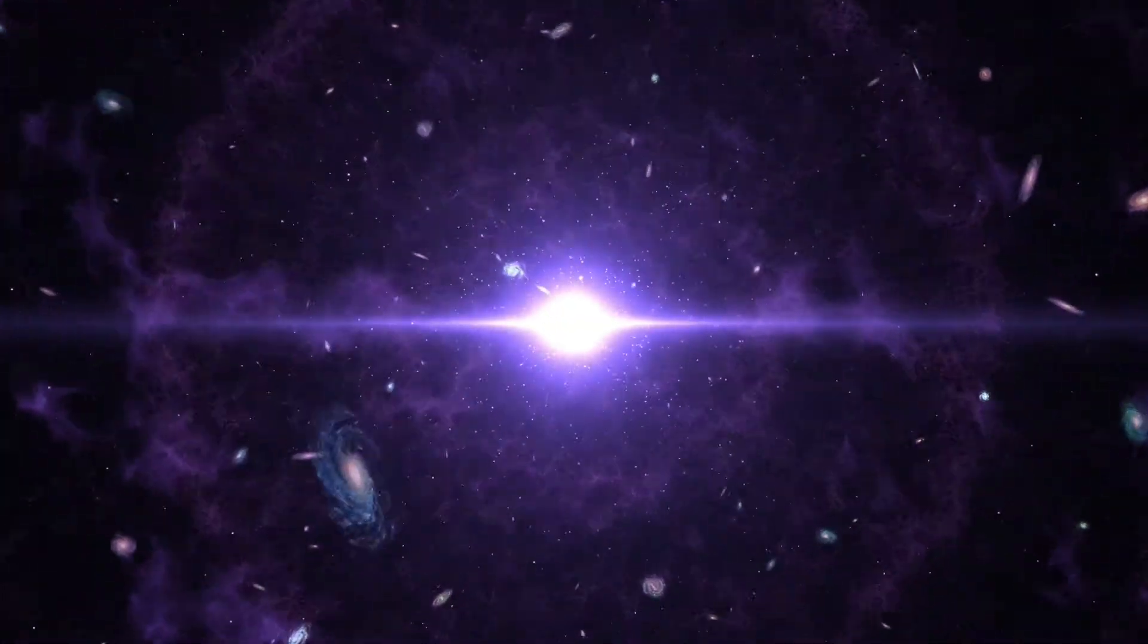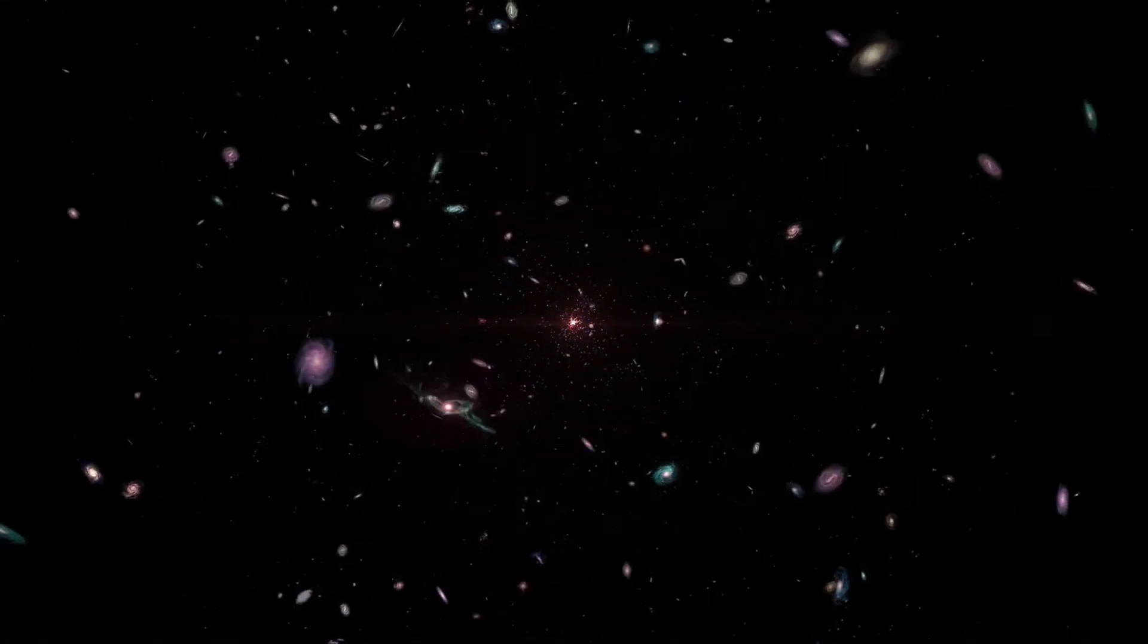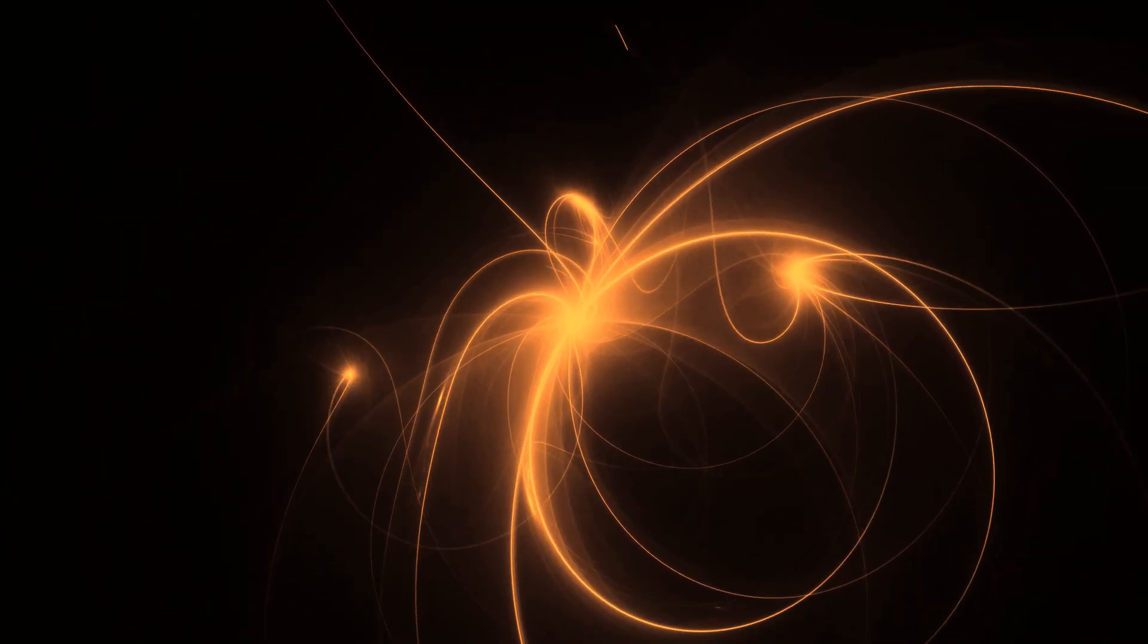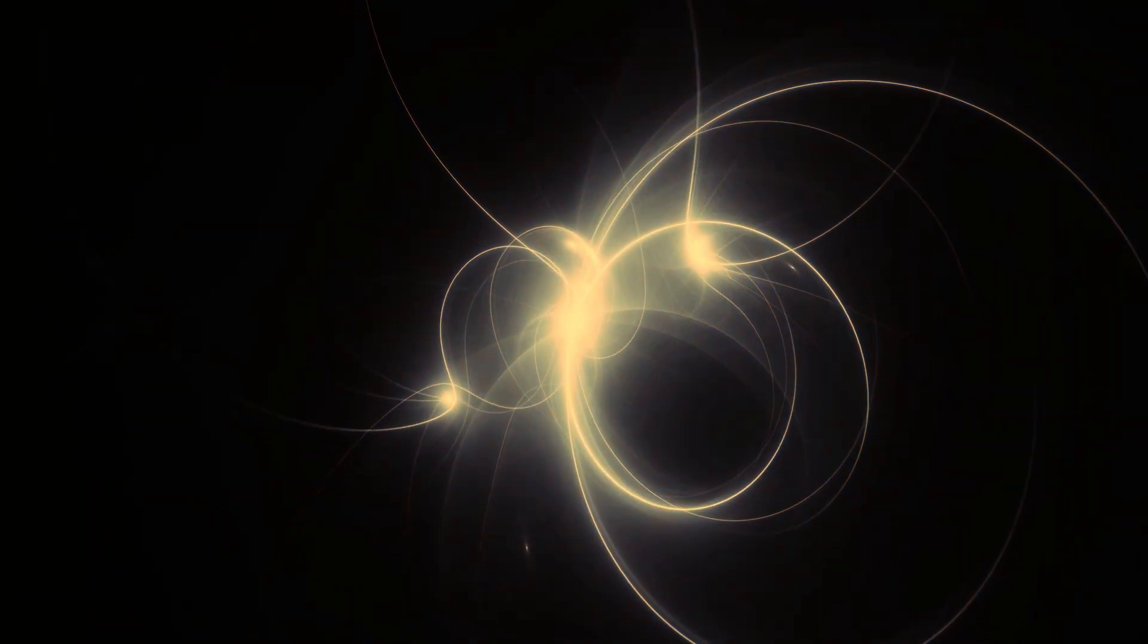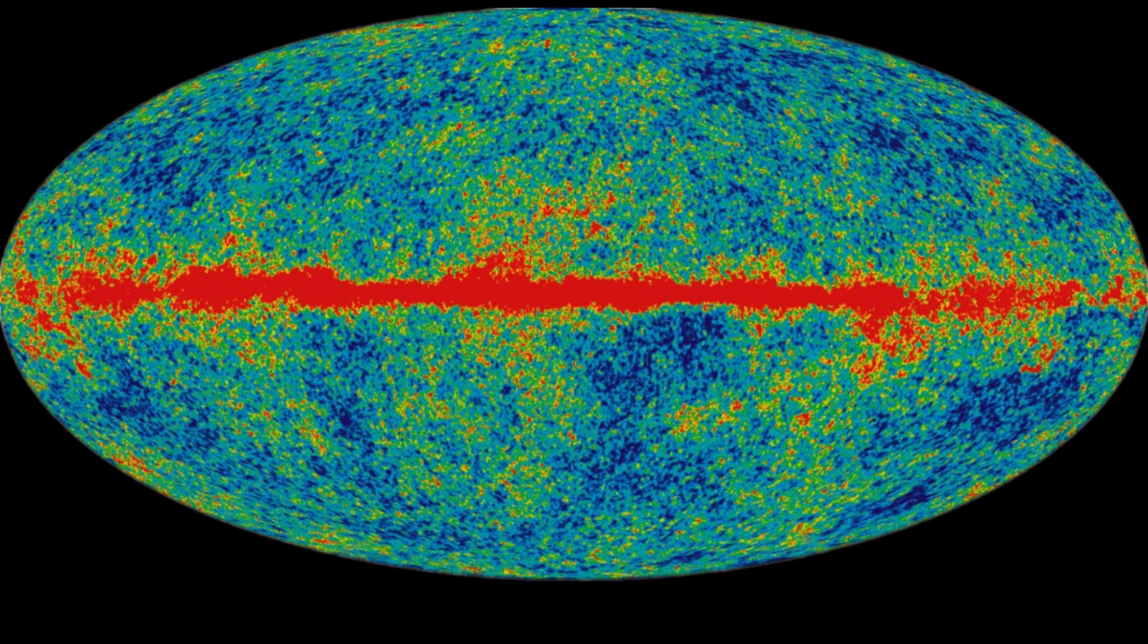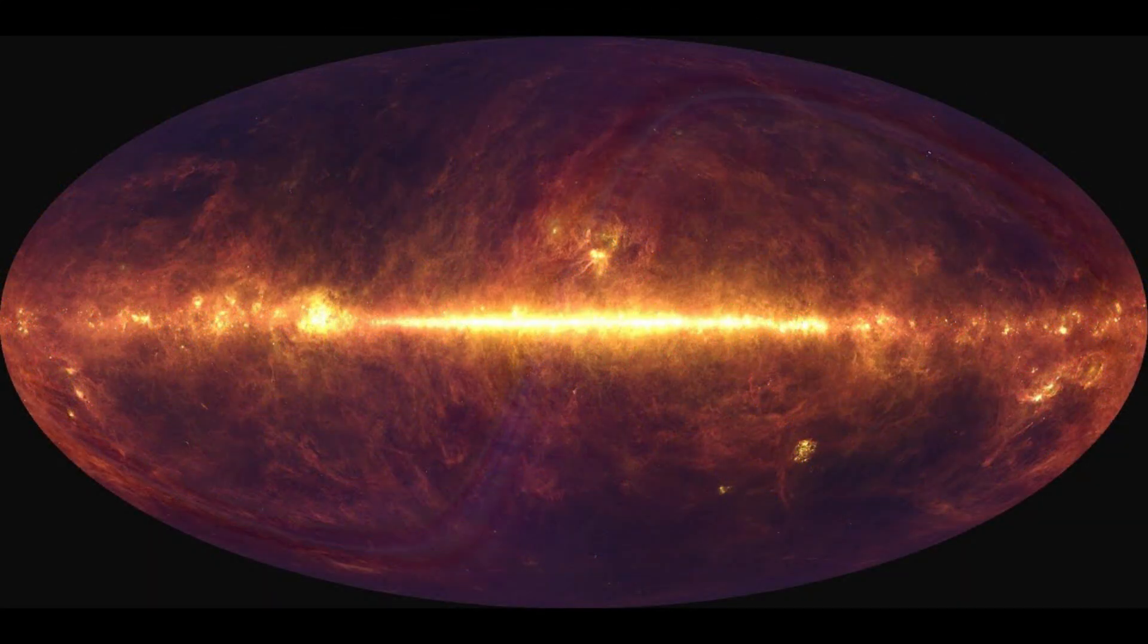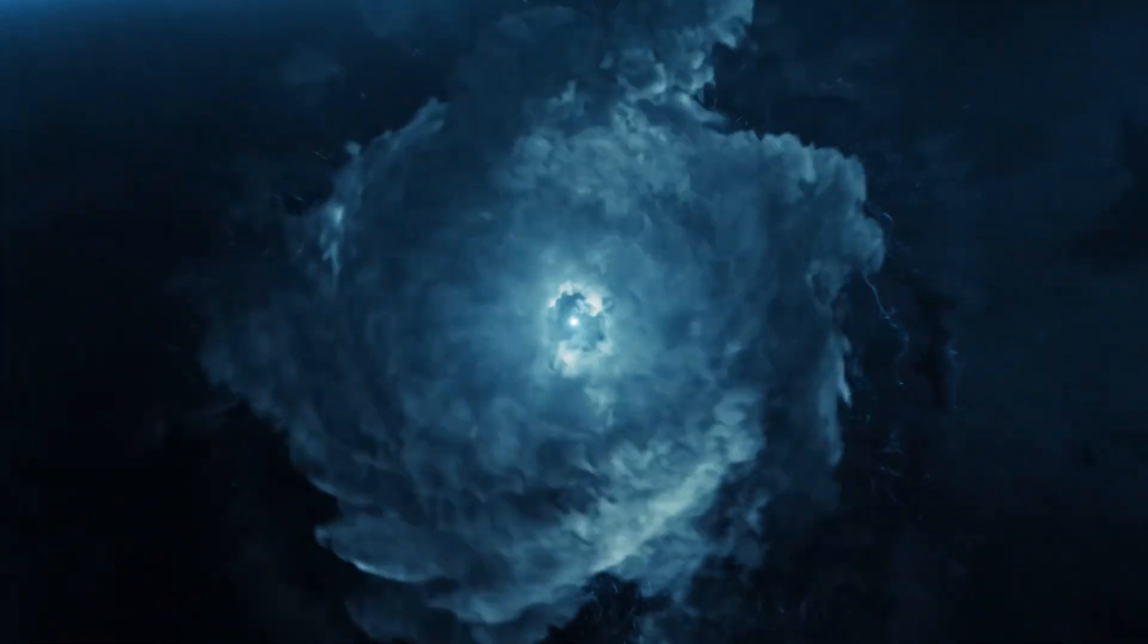After its birth, the universe rapidly expanded and cooled, mainly due to the swift increase in space. As this expansion continued, the wavelengths of electromagnetic radiation, which are associated with temperature, lengthened, leading to a decrease in temperature. This is why the cosmic microwave background radiation, originating from the early universe, has such a low temperature today. As the universe expanded, the composition of matter changed as well.